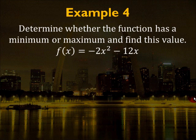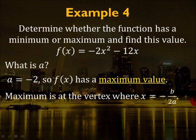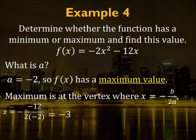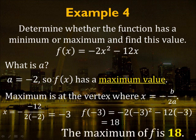Example 4: f(x) = -2x² - 12x. Here a = -2, so f(x) has a maximum value and the parabola opens downward. The vertex x-coordinate is -b/(2a) = -(-12)/(2×-2) = 12/-4 = -3. To find the maximum value, plug x = -3 into the function: f(-3) = -2(-3)² - 12(-3) = -18 + 36 = 18. So the maximum value of the function is 18.